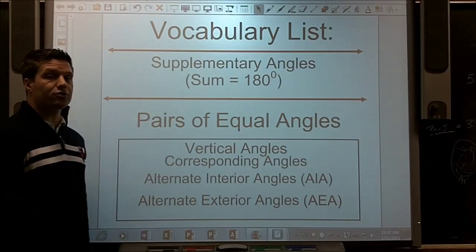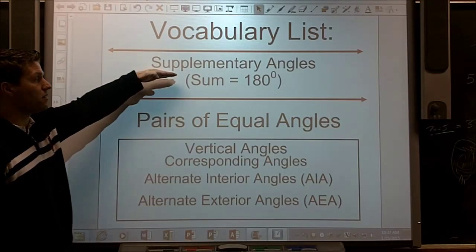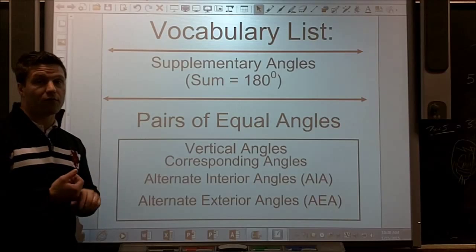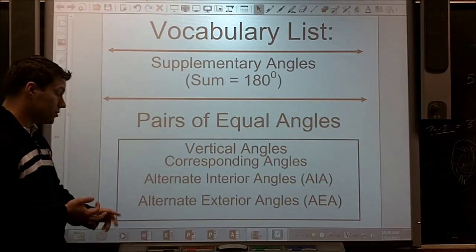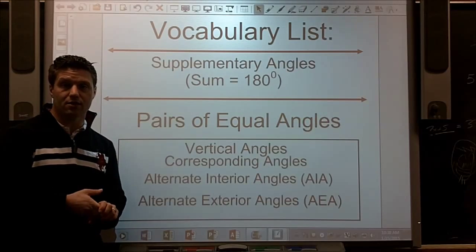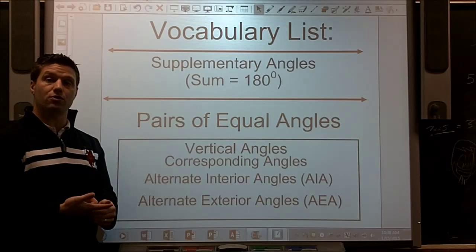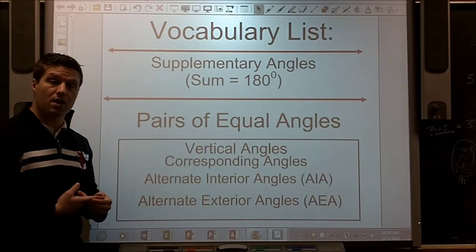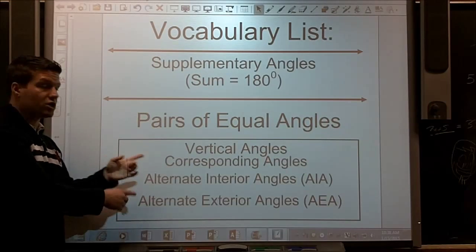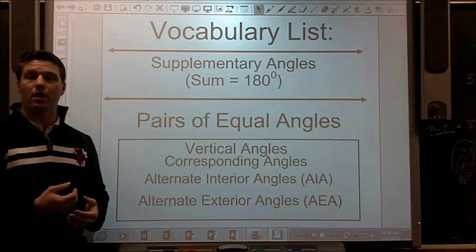So before we do that algebra, I just want to go over the vocab again that we've touched on. We've already talked about supplementary angles, angles that add up to 180. And then we started to make these pairs of equal angles: vertical angles, corresponding angles, we have AIA alternate interior angles, and AEA alternate exterior angles. And remembering these two groups is going to help us today with our equation writing, because our equations are either going to be equal to 180 degrees or equal to each other.